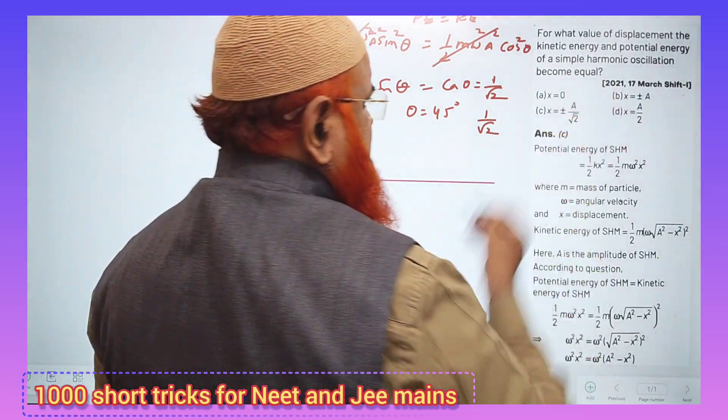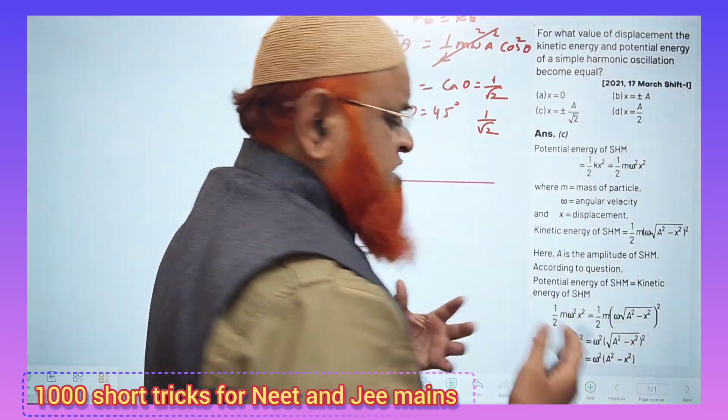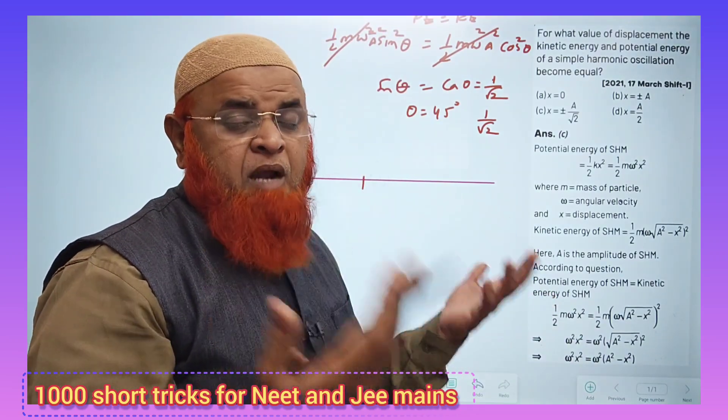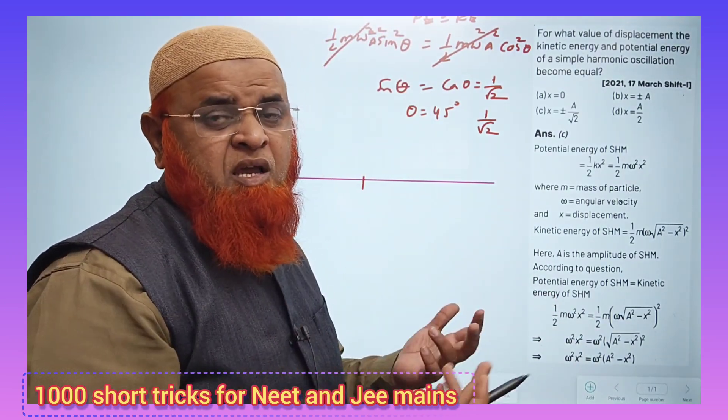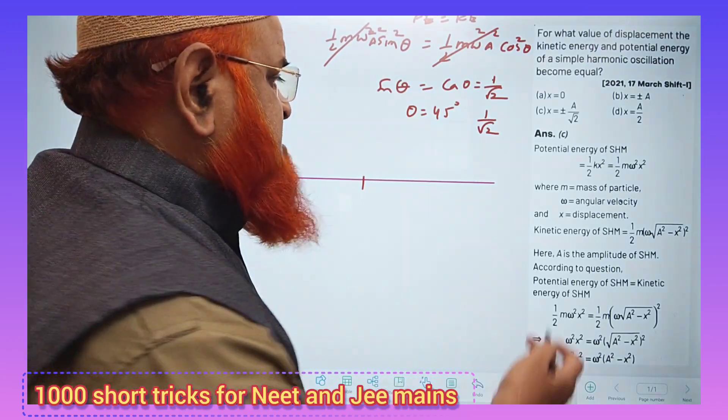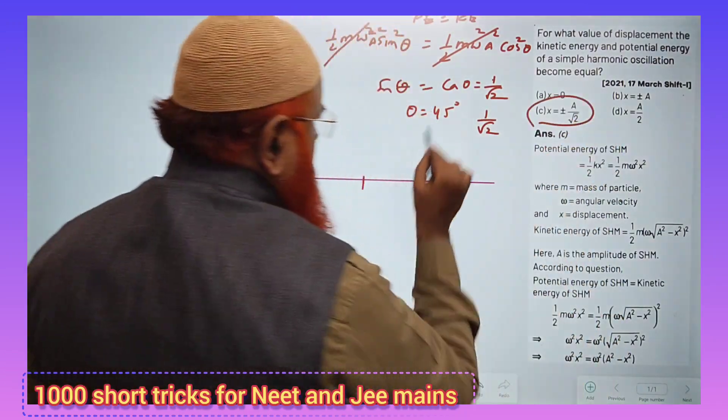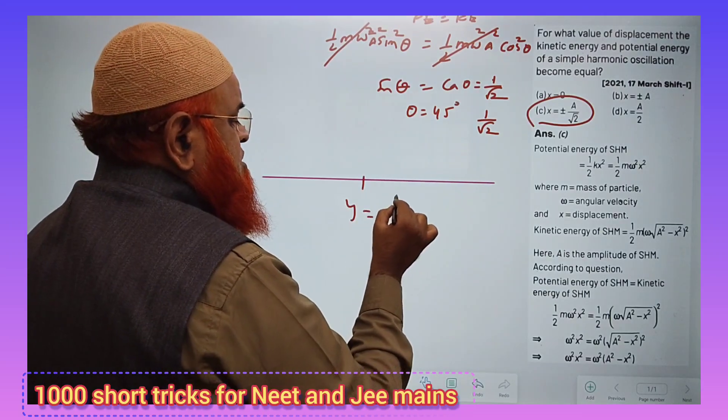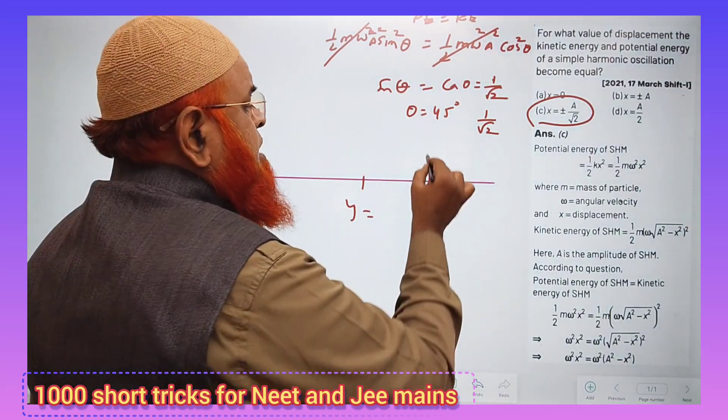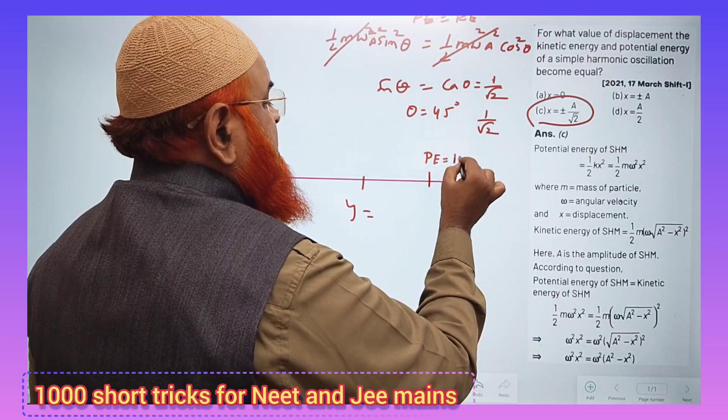Then you can find out what is the distance at which the potential is going to be, at which displacement is going to be, how much part of amplitude. You can see here now, your answer is going to be a by 2, y, because y is equal to, at this point somewhere, potential energy is going to be equal to kinetic energy.